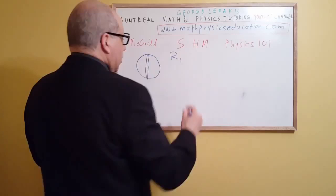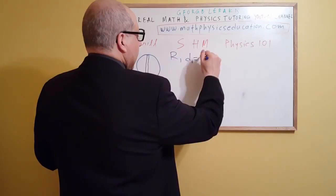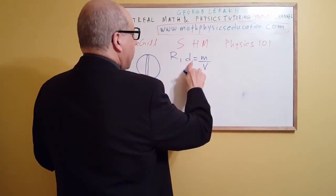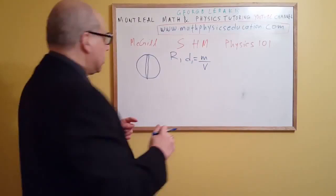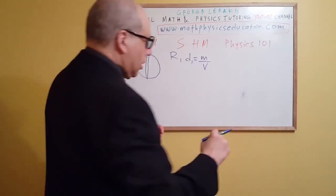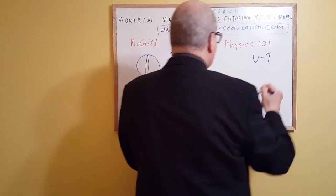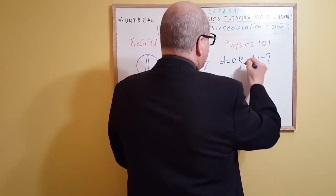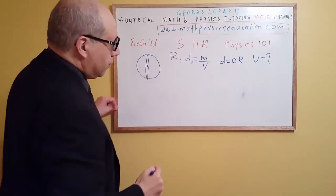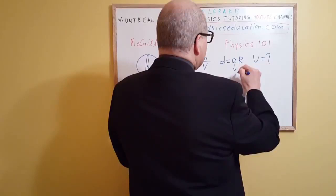So what do we know? We know the radius of this planet, let's say r. We know the density of the planet as mass per volume. And what do we want to find? We want to find what is the speed of the message that drops when it is at a distance d equal to a·r from the center of the planet, where a is less than one.